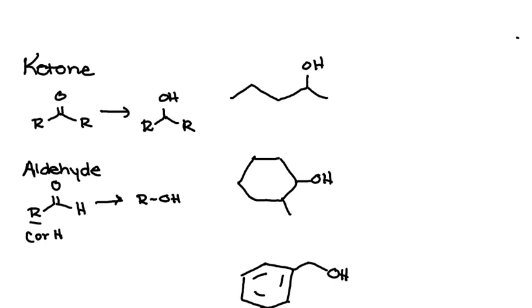So if you look at the first one here, we have carbons on either side, so this is coming from a ketone. So that means that this comes from reducing this ketone here.